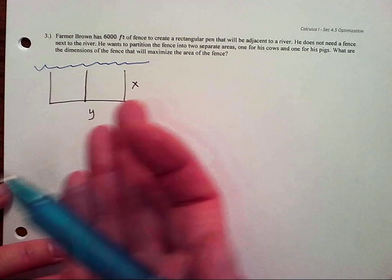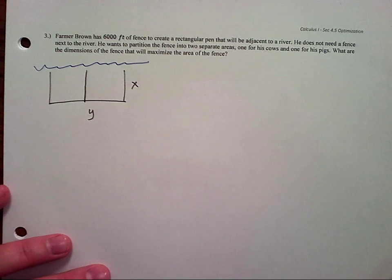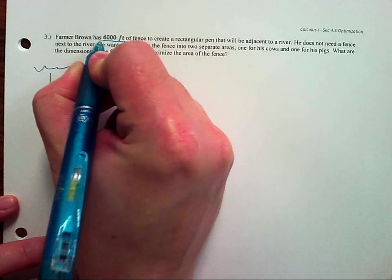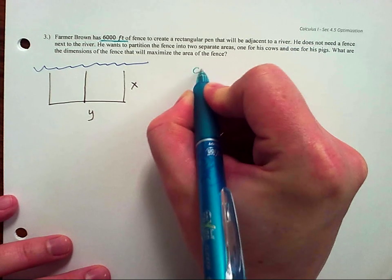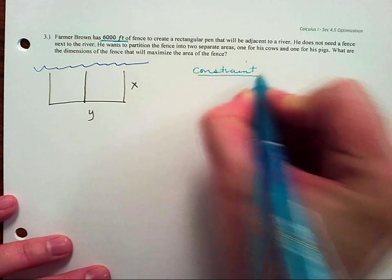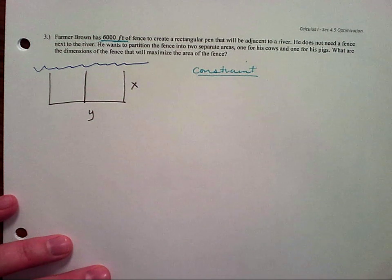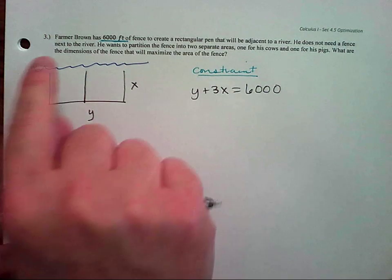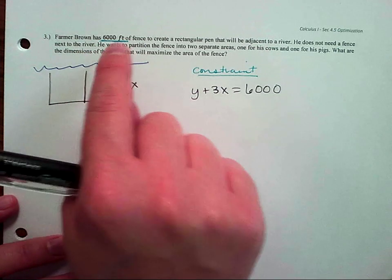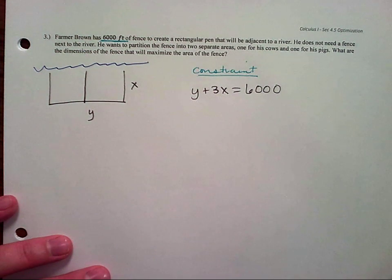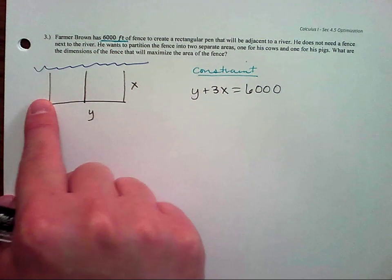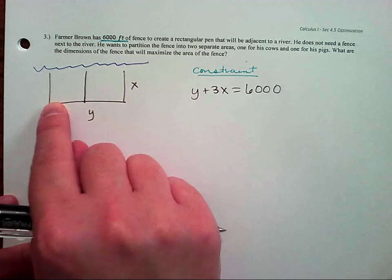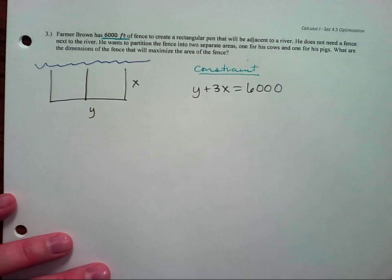x is one side, y is the other side. The number in our problem is 6,000 feet — that's the total length of fence. If I add up all the sides plus the length of the partition, that's the total length: x plus y plus x plus x. So 3x plus y equals 6,000. That's our constraint equation.